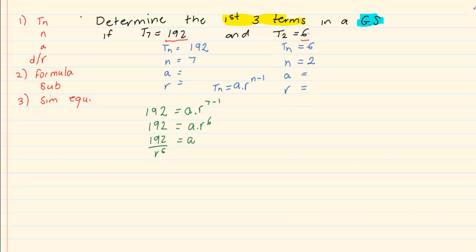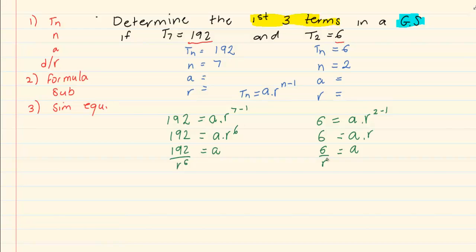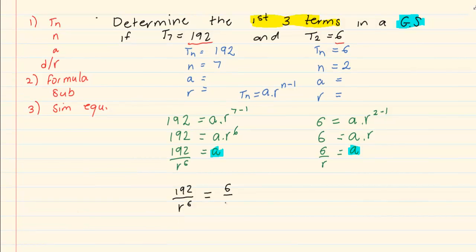Now, let's do the same thing where T2 is equal to 6. Let's substitute that information into the formula. So we are going to have 6 is equal to A times R to the power of 2 minus 1. So we would have A times R is equal to 6. A is equal to 6 over R again. Now, once you have that they are both equal to A, simultaneous equations means we are going to substitute 6 over R into A.